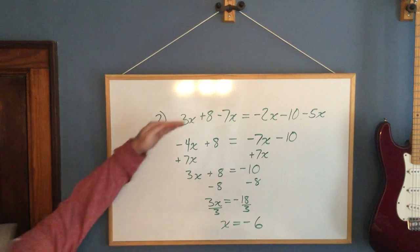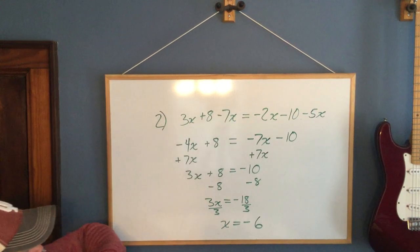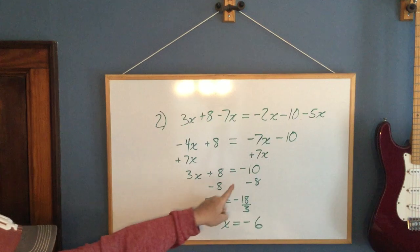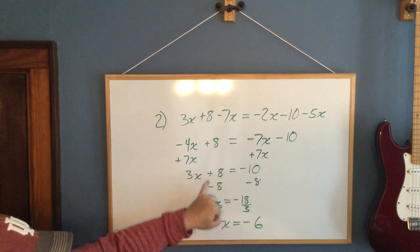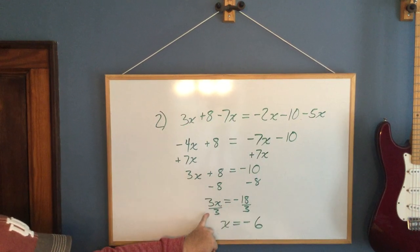So I simplified each side first. Got rid of a variable. And then used the order of operations backwards by getting rid of addition. Then I got rid of division.